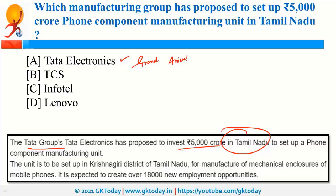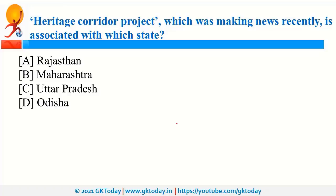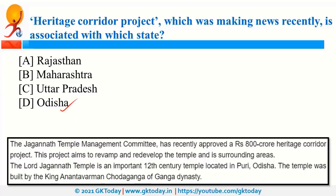The Heritage Corridor project is associated with Odisha. The Jagannath Temple Management Committee recently approved this 800 crore rupee project aimed at redeveloping the temple and its surrounding area. The Jagannath Temple is a 12th century temple situated in Puri, Odisha, built by King Anantavarman of the Ganga dynasty.